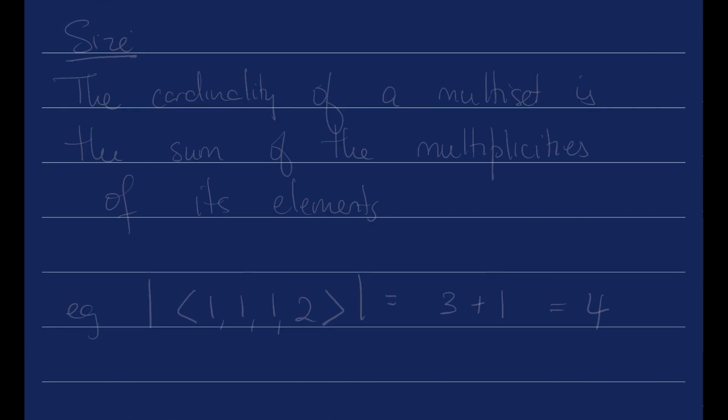Let's talk about the size. The size of a multi-set - we use the word cardinality much like with sets. The cardinality of a multi-set is the sum of the multiplicities of its elements.